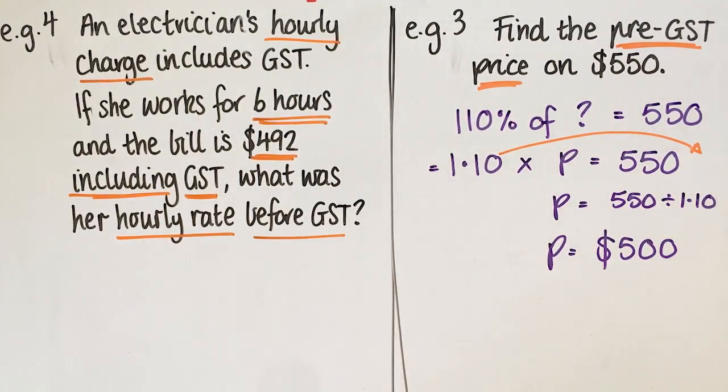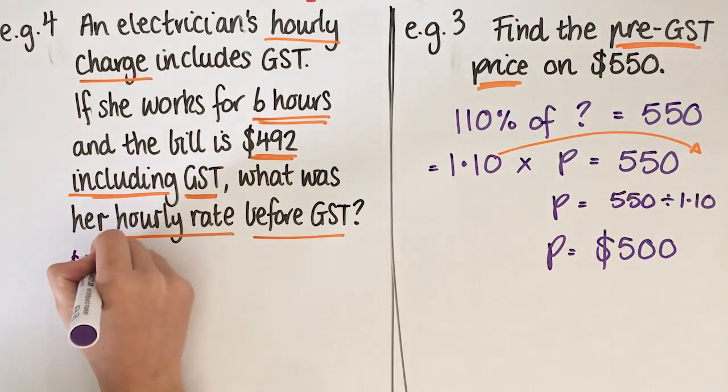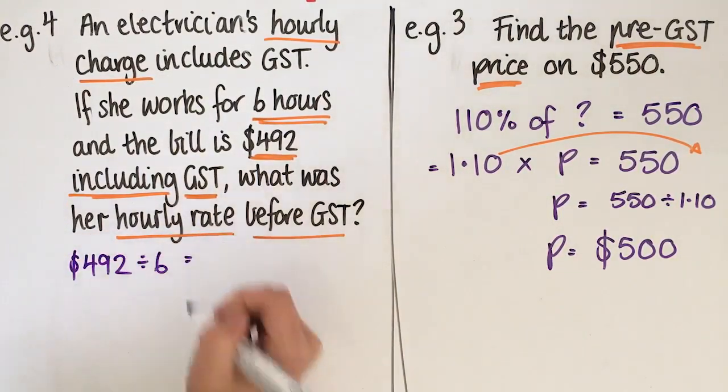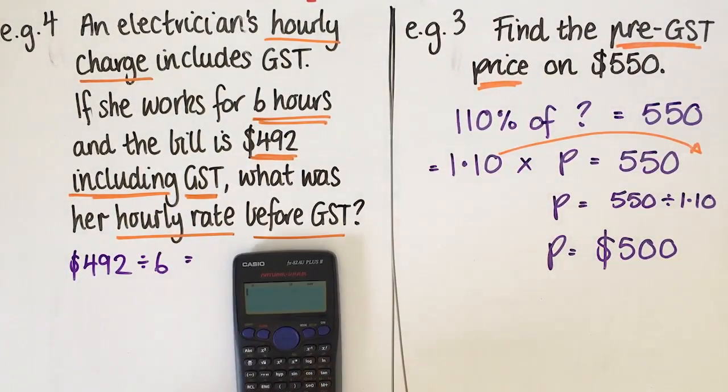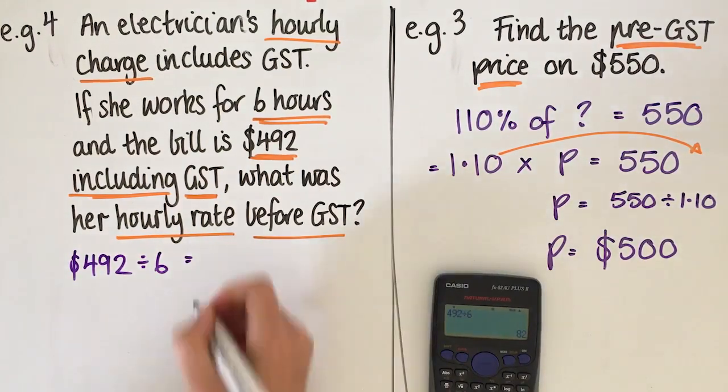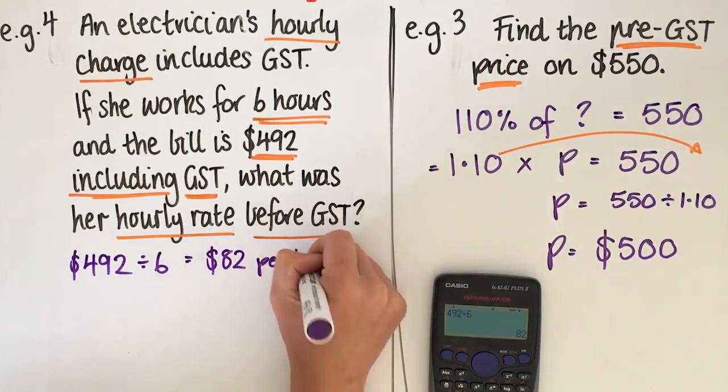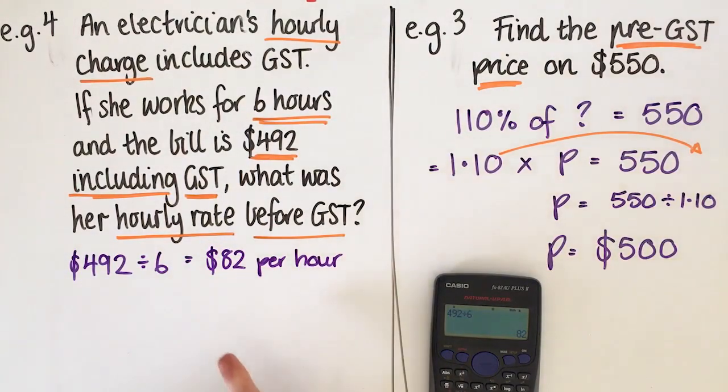So the first thing we need to do is actually work out what her hourly rate was. Okay, so she charged $492 for six hours. So to work out what she got for each hour you have to divide that. So $492 divided by six will give us $82 per hour. Okay, is how much she was making. Okay, every hour she worked the charge was $82. She didn't necessarily make that.